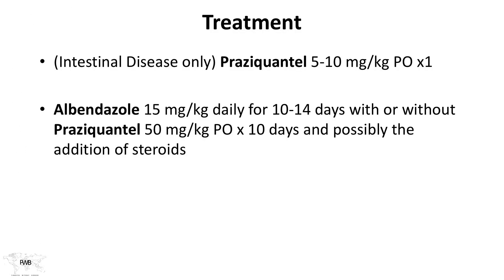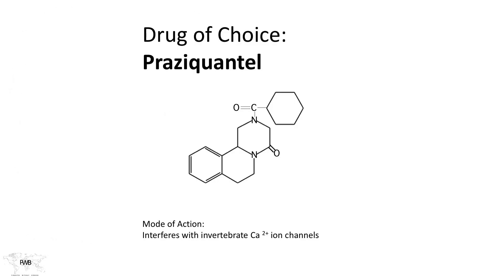What about treatment? For intestinal disease, we want a luminal agent: praziquantel can be given in a single dose. We also have the option, particularly if we're worried about invasive disease, of adding albendazole with or without praziquantel. Depending on the location, steroids are sometimes added to treat the degree of inflammation. The drug of choice is praziquantel, with a mode of action where it interferes with the invertebrate calcium ion channels.